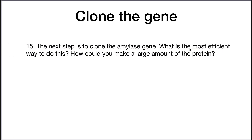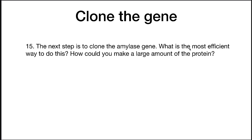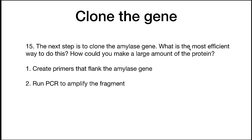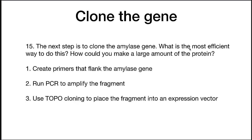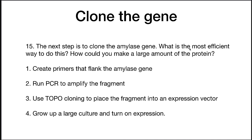Finally, you want to clone the gene. You've now found your amylase gene — what is the most efficient way to make a large amount of this protein? First, you create primers that flank the amylase gene region. You then run PCR to amplify the fragment. Then you use CPEC cloning to place the fragment into an expression vector. And lastly, you grow up a large amount of this culture and turn on expression by relaxing the repressor.